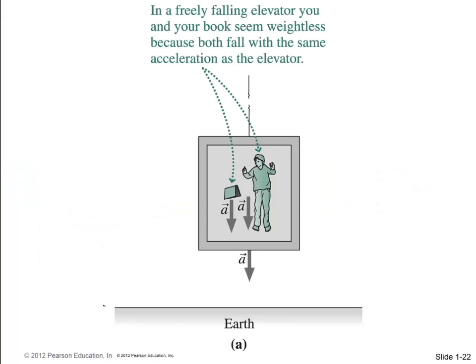So weightlessness. Here's an example of being in an elevator, if you can imagine. This is a thought experiment. And suddenly the rope breaks. The elevator starts accelerating downwards at 9.8 meters per second squared. Well, if you dropped a book at that same instant, it would accelerate downwards at 9.8 meters per second squared. So in the frame of the elevator, you would just see the book just hovering beside you. So this is apparent weightlessness.